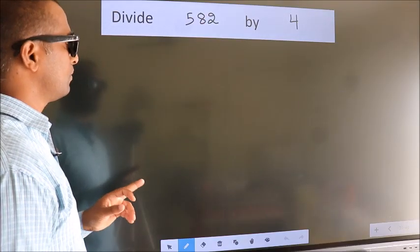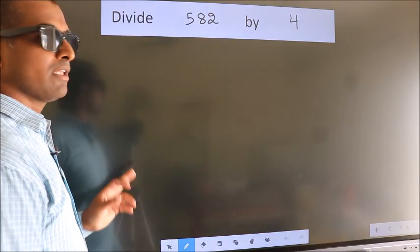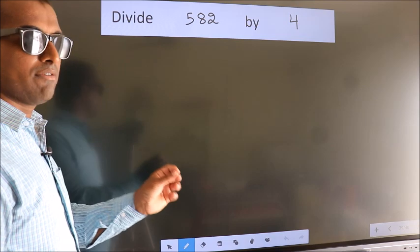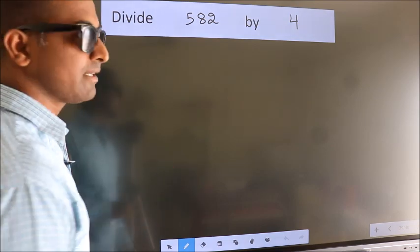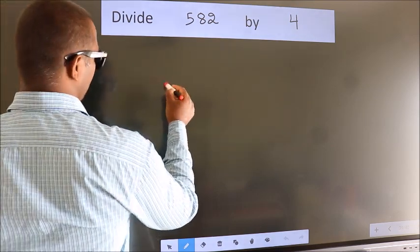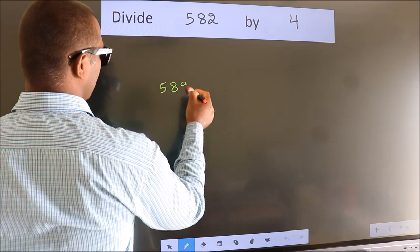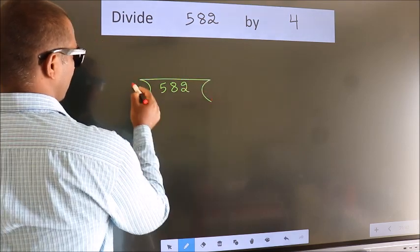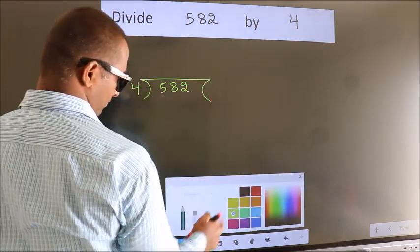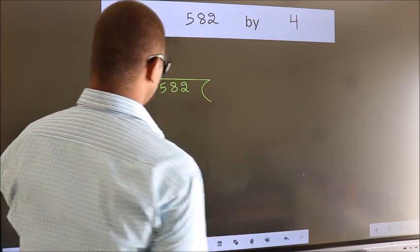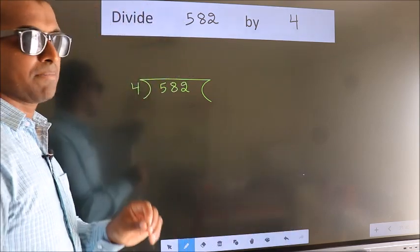Divide 582 by 4. To do this division, we should frame it in this way. 582 here, 4 here. This is your step 1.